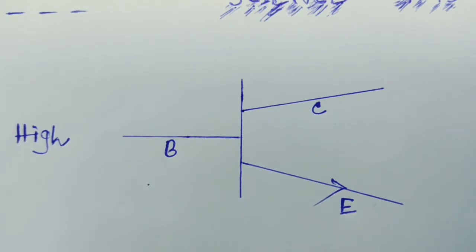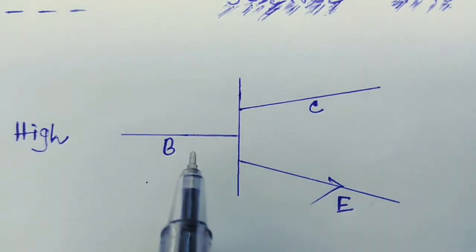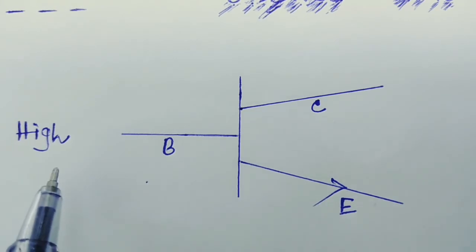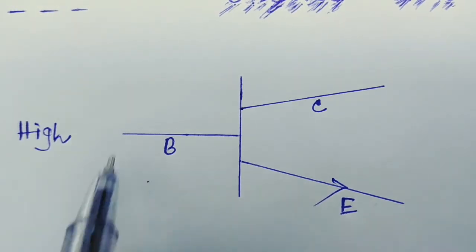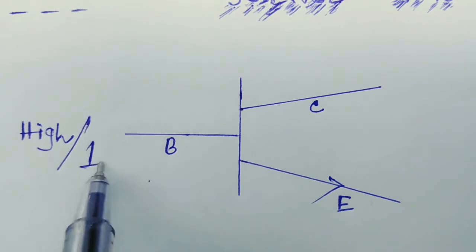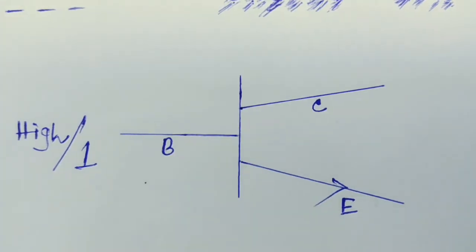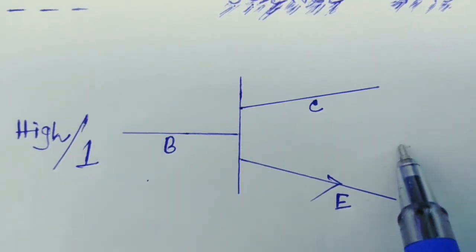Before we start discussing about an astable multivibrator, we have to understand the concepts about transistors. Suppose this is a transistor — base, collector, emitter — three terminals. We are giving a high input or a high voltage into the base. If we give a high input to the base, the transistor will start conducting, and as soon as it starts conducting, it will go to the saturation mode. As soon as it goes to saturation mode, the collector voltage VC will start decreasing.